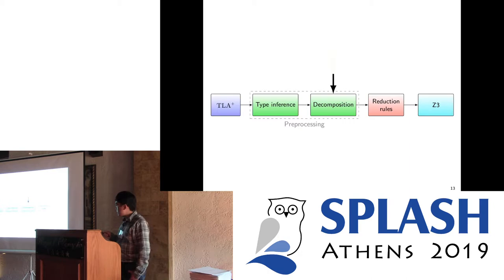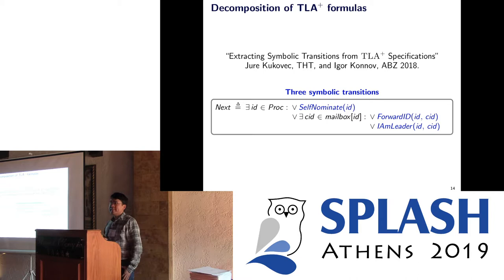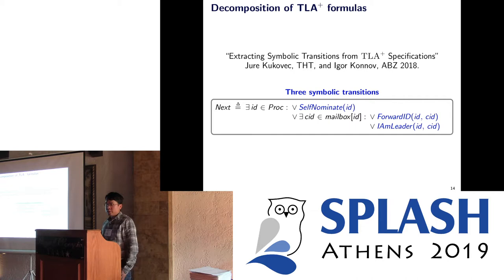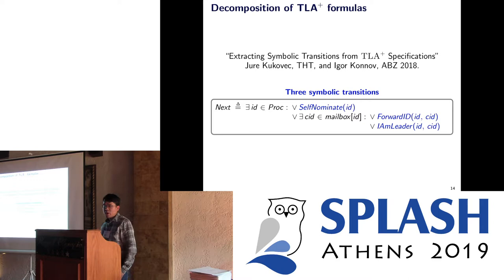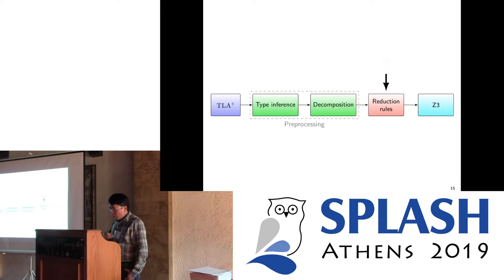The second part is about decomposition. I will not give much detail here because it is based on our previous paper at the conference APZ. The main idea is to split the transition formula into smaller chunks and study each chunk independently. For example, we split the Next formula into three smaller actions: self-nominate, send ID to neighbor, and declare as leader. This decomposition was an optimization in our work.